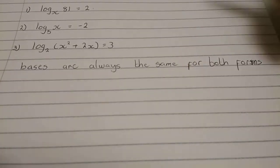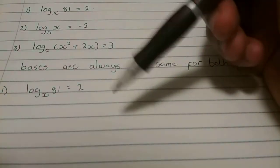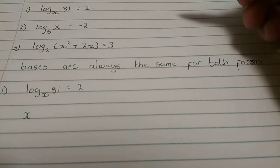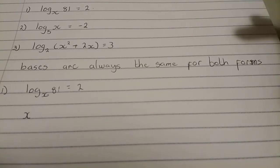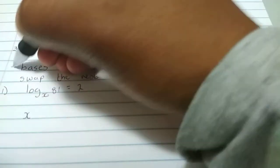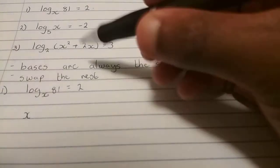Let's take this one as an example, number one. Log x 81 is equal to 2. Now, the base of this log is x. The base is always at the bottom. So I'm going to have it as the base of the exponent as well because the bases are always the same. And then the second thing I do is just swap the rest. So these are my two rules for solving these questions.